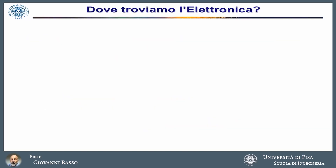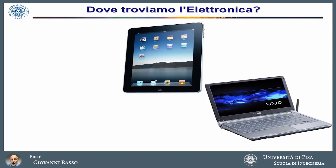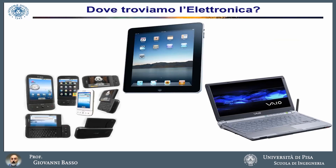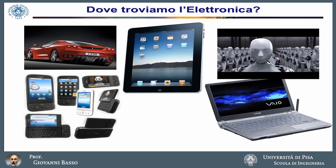Where do we find electronics? We find electronics clearly in a personal computer. We find electronics also in smaller devices than a personal computer, like, for example, a tablet. We find electronics in cellular phones, in navigation systems. There is always more electronics on the board of vehicles — automobiles, motor vehicles, and industrial vehicles.